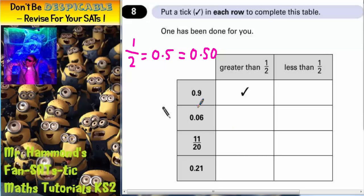Well 0.9, we can see straight away, is bigger than 0.5. So that's why it's greater than a half.